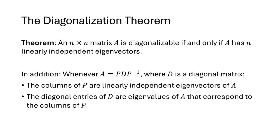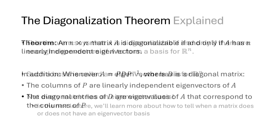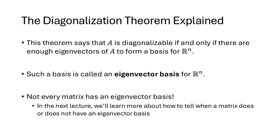When is a matrix diagonalizable? The diagonalization theorem says that an n by n matrix A is diagonalizable if and only if A has n linearly independent eigenvectors. Whenever A is diagonalizable with A equaling P D P inverse, the columns of P are linearly independent eigenvectors of A, and the diagonal entries of D are the corresponding eigenvalues. In other words, A is diagonalizable if and only if there are enough eigenvectors to form a full basis for R^n — called an eigenvector basis. Not every matrix has an eigenvector basis, and the next lecture will cover how to determine when one exists.